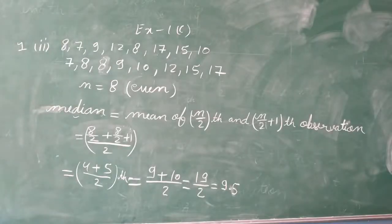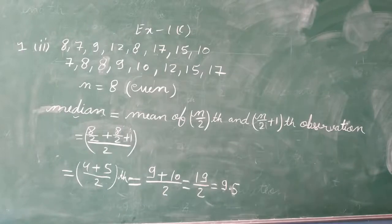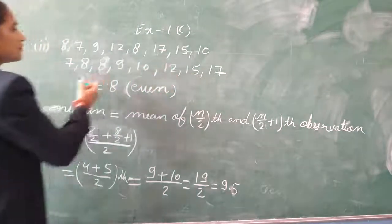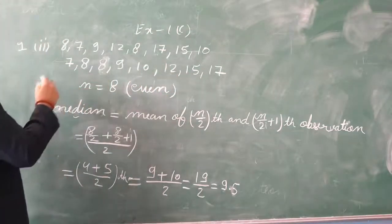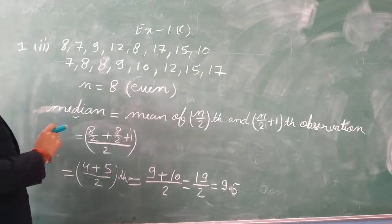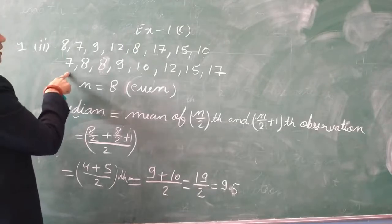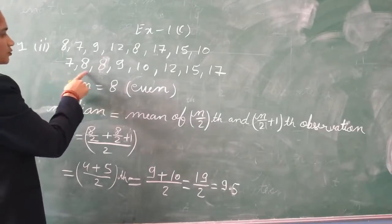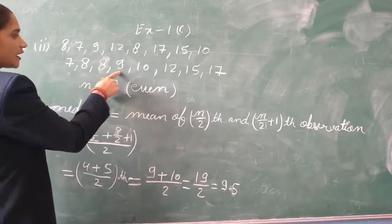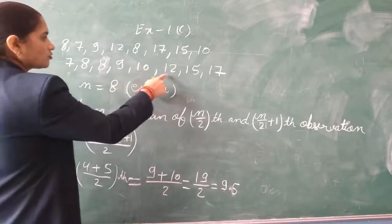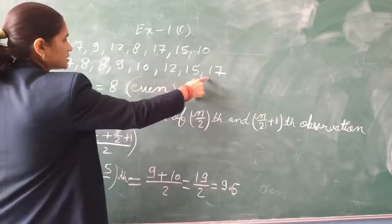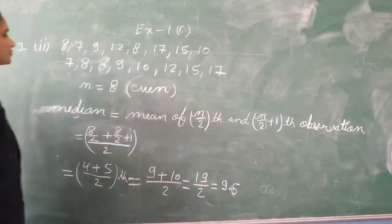Question number 1, second part. These are the observations. First we will put all these in ascending order. We will start from 7: 7, 8, 8 (appears 2 times), then 9, 10, 12, 15, 17.